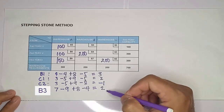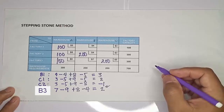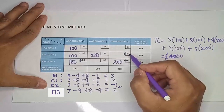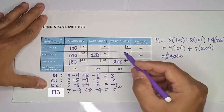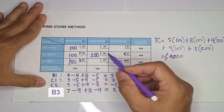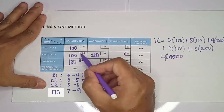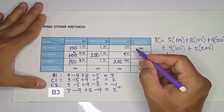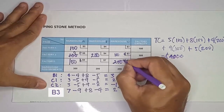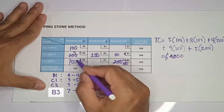Since one improvement index is negative — specifically C2 gives 3 minus 5 plus 9 minus 8 = negative 1 — there will be a redistribution on C2. The takers on this loop are C2 and A3; the givers are C3 and A2. The lower value among the givers is 100 units, which we redistribute on the loop of C2. C3 gives away 100 units (becomes 0), C2 takes 100, A2 gives away 100 (becomes 100), and A3 takes 100 (becomes 200).